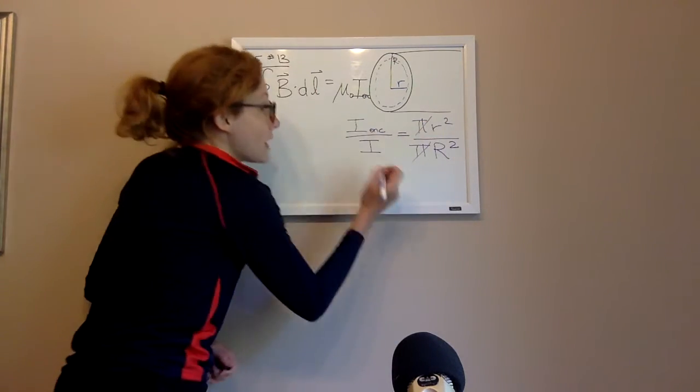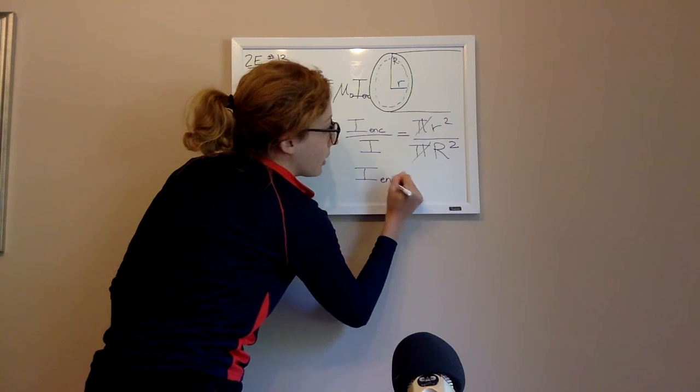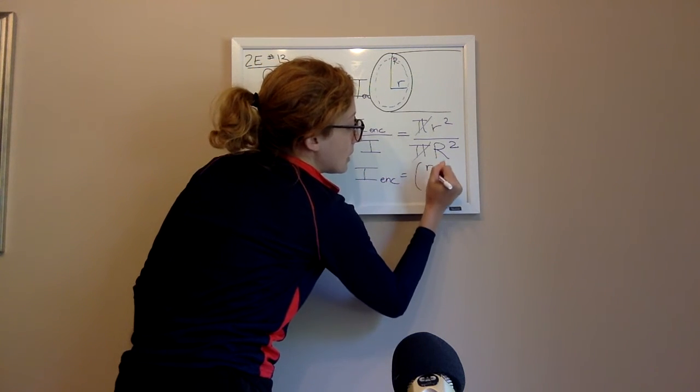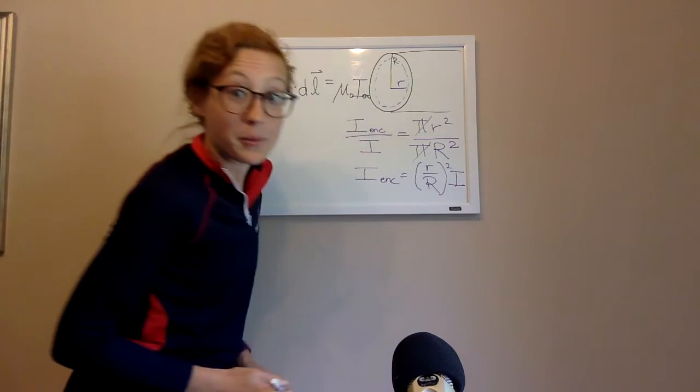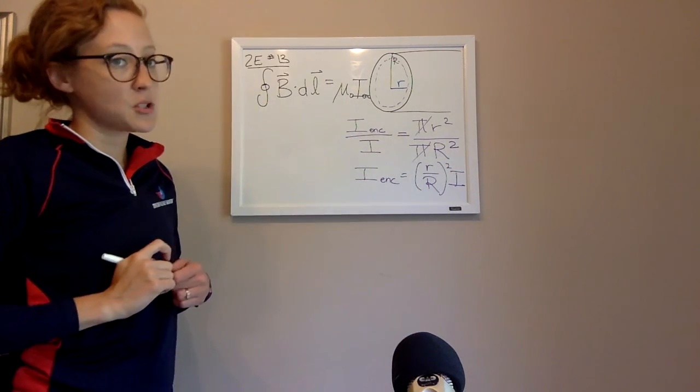And so I can write I enclosed, and now it's really just a matter of solving for I enclosed. I enclosed is little r over big R squared times capital I. And now it's really straightforward.